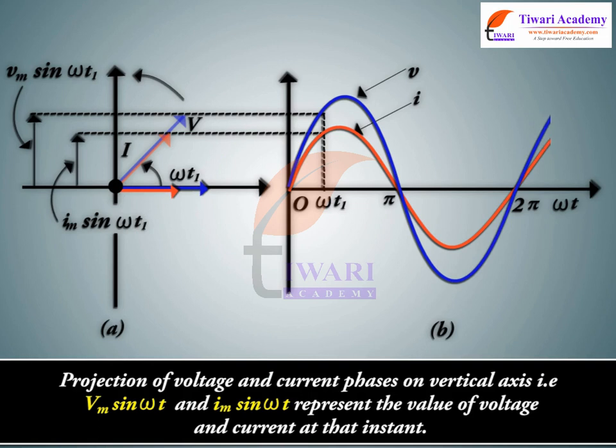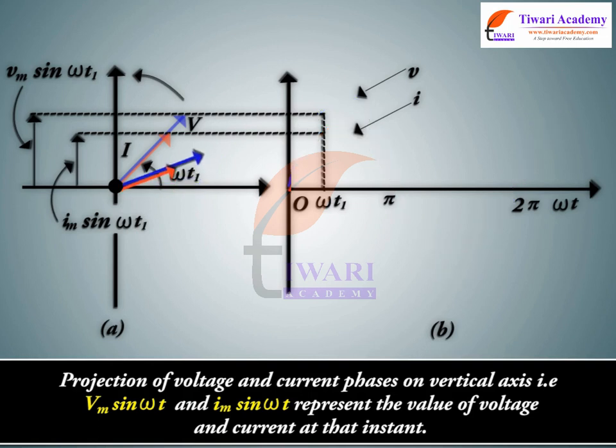Projection of voltage and current phasor on vertical axis, i.e. Vm sin omega T and Im sin omega T, represent the value of voltage and current at that instant.